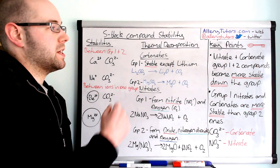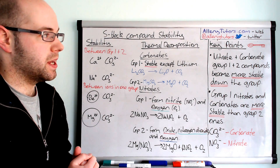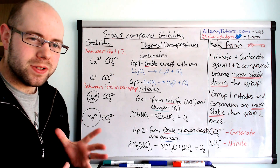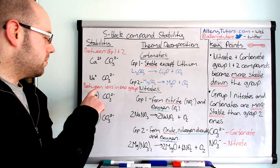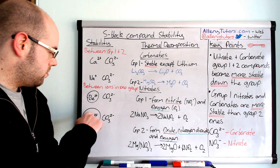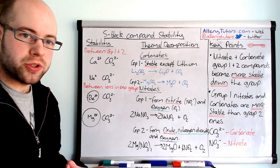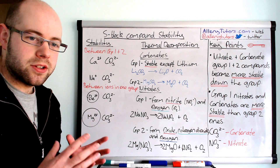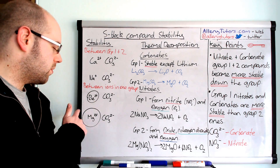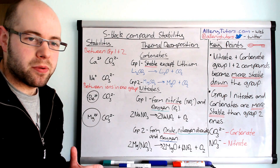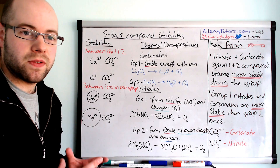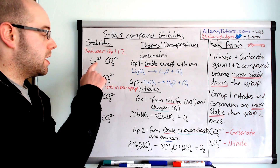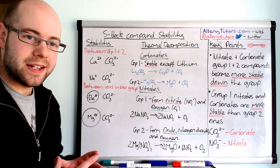The next key point is that nitrate and carbonate group 1 and 2 compounds become more stable as we go down the group — this one is a little bit more complex. Here we have two ions, both group 2 elements: beryllium and magnesium. I've drawn the magnesium ion bigger than the beryllium ion because in terms of ionic radius it is bigger than beryllium.